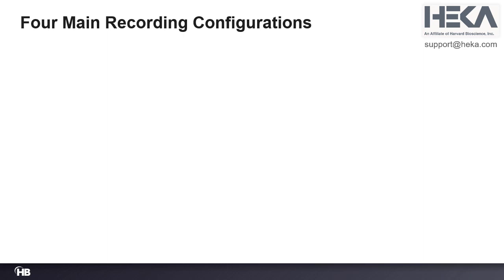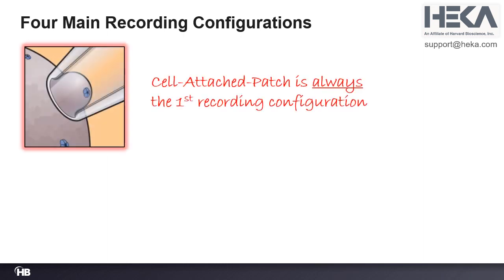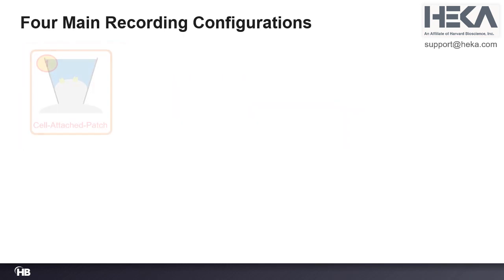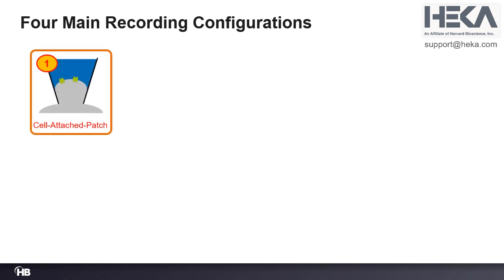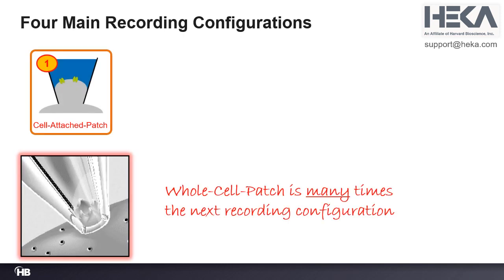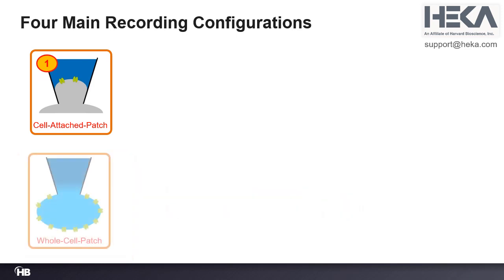There are four main recording configurations. The first one that always has to be established is the cell-attached patch configuration — this will always be the very first recording configuration you need to establish. Then, most of the time, people go one step further and open the cell membrane underneath the patch, thereby gaining electrical access into the entire cell and recording from all the ion channels inside. Therefore it's called whole-cell patch.